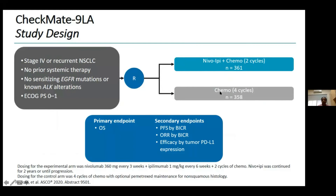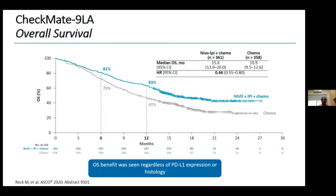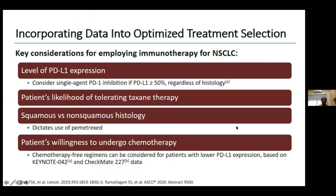In Checkmate-9LA, comparing nivolumab plus ipilimumab plus chemotherapy versus chemotherapy alone, overall survival benefit was seen regardless of PDL1 expression or histology. At 12 months the difference was 63% versus 47%, continuing beyond 24 months. Key factors to consider when selecting therapy include PDL1 expression, histology, patient's likelihood of tolerating taxanes, and patient willingness to undergo chemotherapy — if PDL1 is high and chemotherapy is declined, an immuno-oncology single agent can be used.